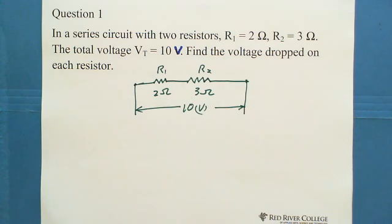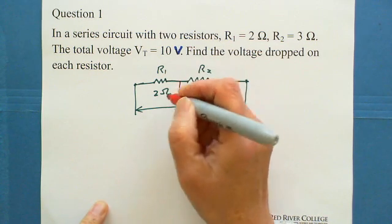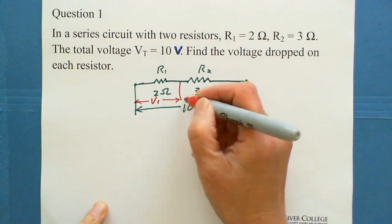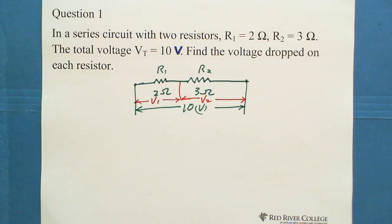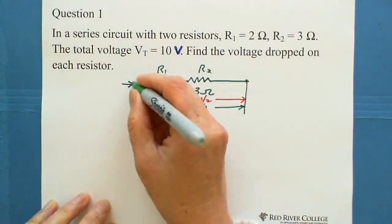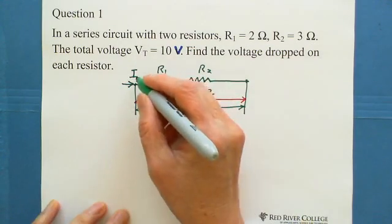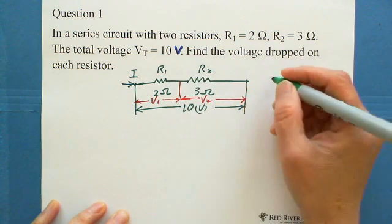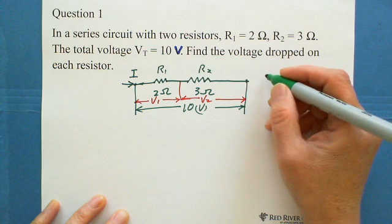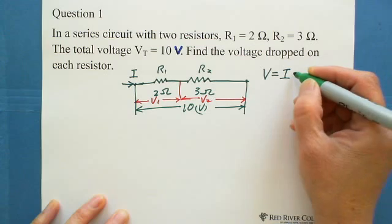We are looking for the voltage dropped on each resistor — what is V1 and what is V2? Because this is a series circuit, there is only one path, so the current passing through each resistor is the same.